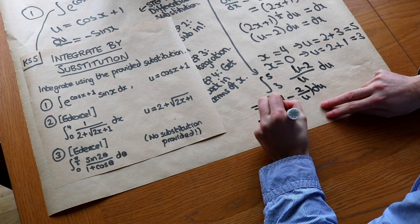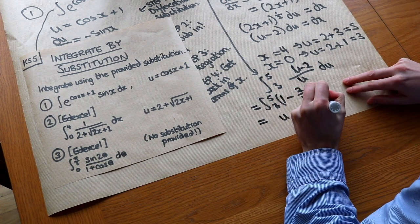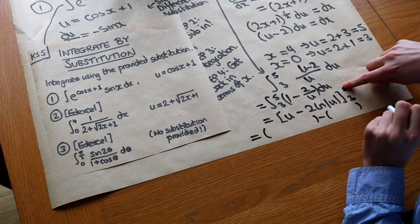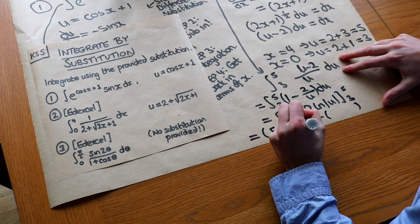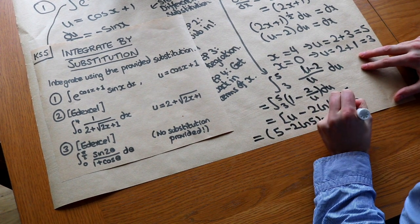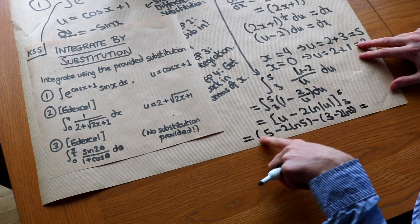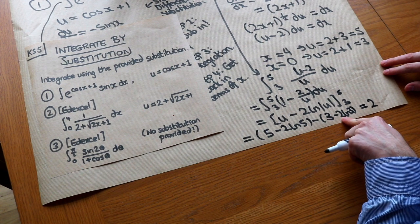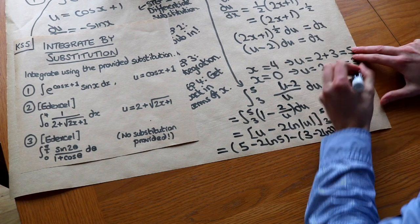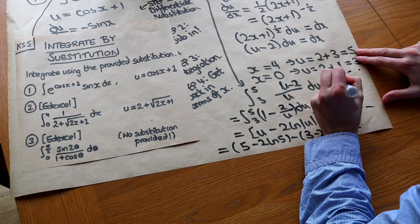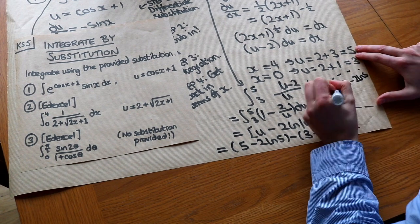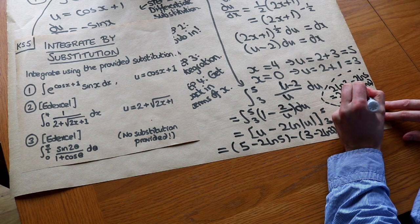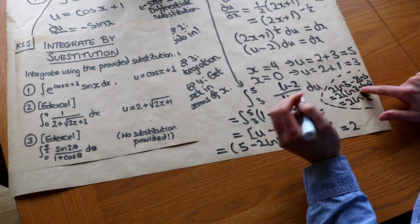Integrating: 1 becomes u, and 2 over u integrates to 2 ln u, with bounds 5 and 3. Substituting the 5 gives 5 minus 2 ln 5, and substituting the 3 gives 3 minus 2 ln 3. Simplifying: 5 minus 3 is 2, then minus 2 ln 5 minus minus 2 ln 3 gives 2 ln 3 minus 2 ln 5.